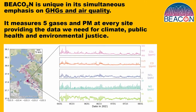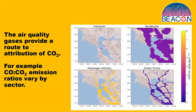BEACON simultaneously emphasizes greenhouse gases and air quality in all measurements. Looking at a time series, you can see a spike in NO that doesn't appear in other traces, and strong correlations elsewhere — for example, between CO and CO₂, since most carbon monoxide and much of the daily CO₂ variation come from cars. The air quality gases provide an important route to attribution of CO₂ sources: passenger vehicles have much higher CO per unit CO₂ than industrial emissions, diesel trucks, or residential heating.